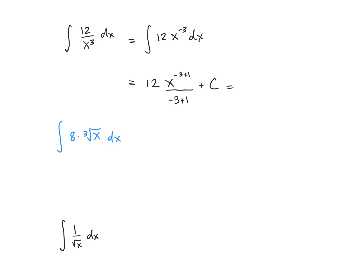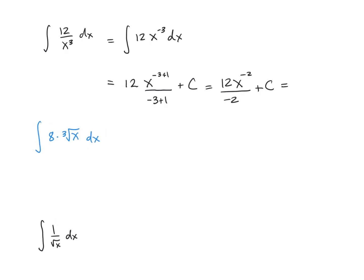If we simplify this down, we're going to have 12 times x to the negative 2, divided by negative 2 plus C. And then our final answer is going to be negative 6 divided by x squared plus C.